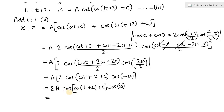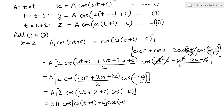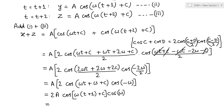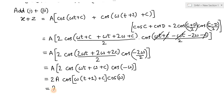Looking at this cosine function: we can take ω common from the first bracket to get cos(ω(t plus 1) plus c). Going back to equation 2, a times cos(ω(t plus 1) plus c) is exactly y. So a multiplied by cos(ω(t plus 1) plus c) equals y, which means the expression becomes 2 times y times cos(ω). Therefore, x plus z equals 2y cos(ω).